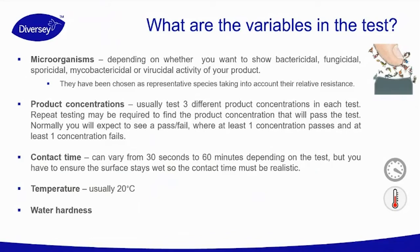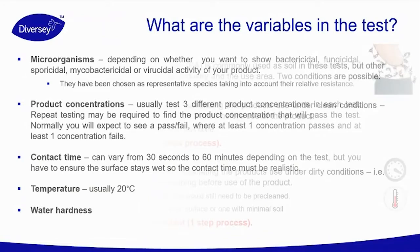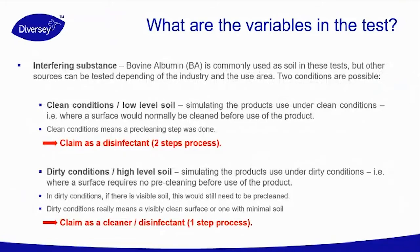Temperature is usually around 20 degrees. Water hardness is also a variable. And then there is the interfering substance, also called the soiling condition. The interfering substance is bovine albumin, commonly used as soil in the test, though other sources can be tested depending on the industry and application area.